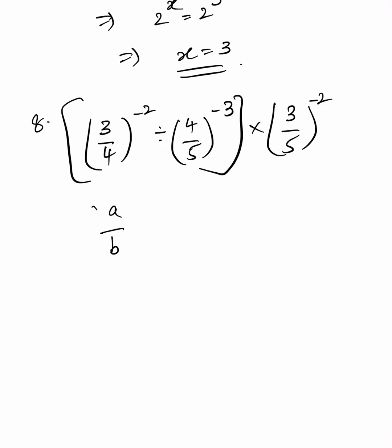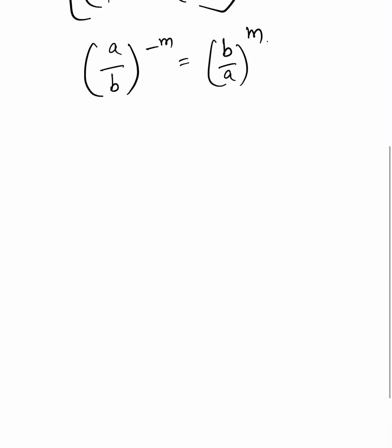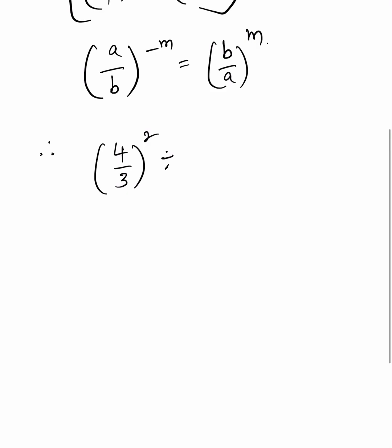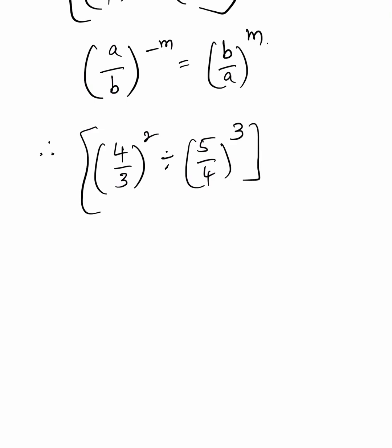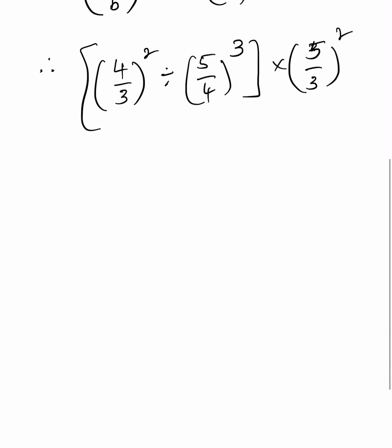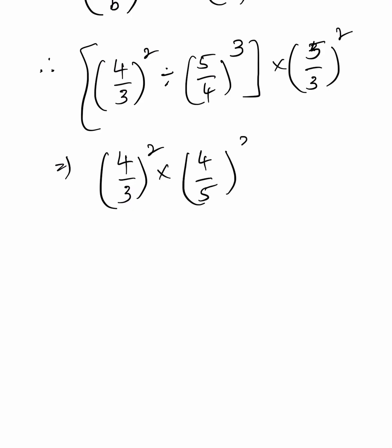We know that a by b whole to the power of minus m equals b by a whole to the power of m. Therefore, the given problem becomes 4 by 3 whole square, divided by 5 by 4 whole cube, into 5 by 3 whole square. Since dividing by a fraction means multiplying by its reciprocal, this becomes 4 by 3 whole square into 4 by 5 whole cube into 5 by 3 whole square.